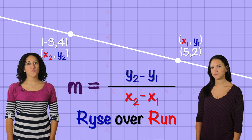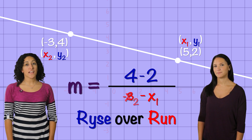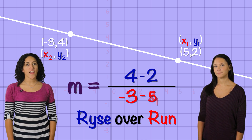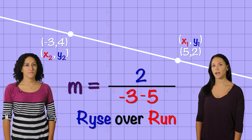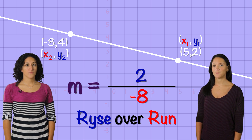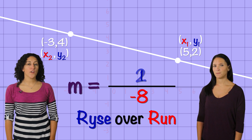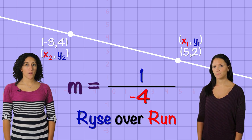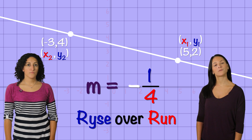So that's m equals 4 minus 2 over negative 3 minus 5. On top, we end up with 2, and on the bottom, we end up with negative 8. If we simplify it, we get 1 over negative 4. Our slope is negative 1 over 4.